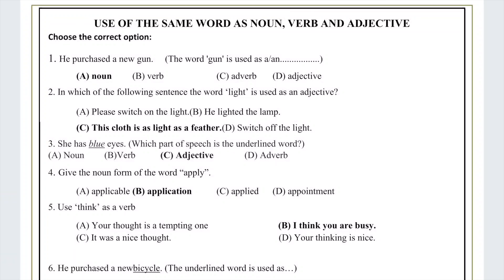Question number one: 'He purchased a new gun.' Next, in which of the following sentences is the word 'light' used as an adjective? Looking at the options: 'Please switch on the light' — here 'light' is a noun. 'He lighted the lamp' — here it is a verb. 'This cloth is as light as a feather' — this is the right answer. The last option also has a noun, so option C is correct.